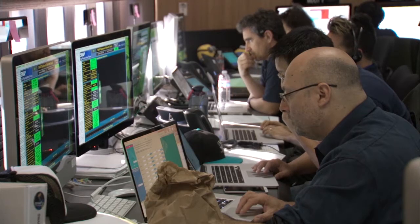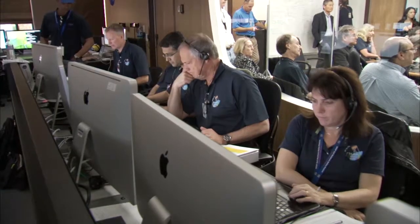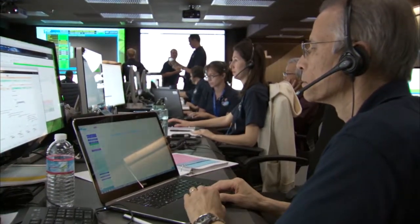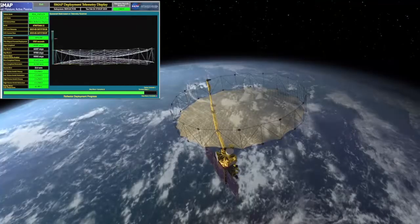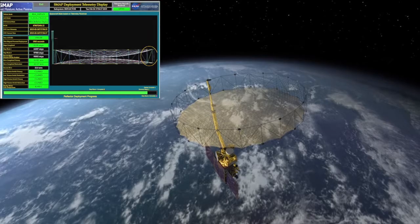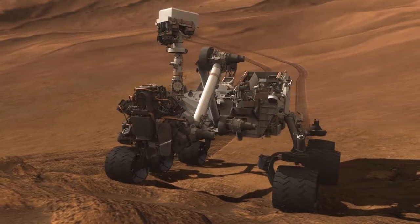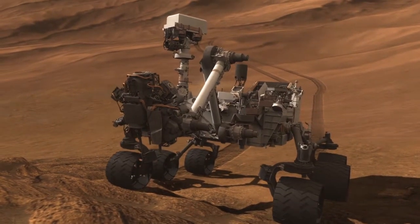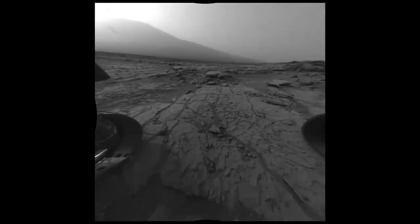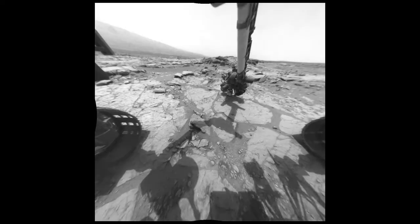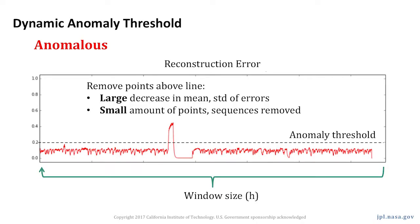For our experiments, we collected anomaly reports filed by engineers during two missions: SMAP, which is an earth-orbiting satellite used to measure soil moisture, and Mars Science Laboratory rover Curiosity, which has been on Mars since 2012. We ran our anomaly detection system over an extended time window around each anomaly to test whether our approach could have detected it and to get a sense of the rate of false positives generated.